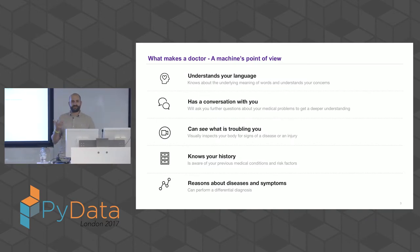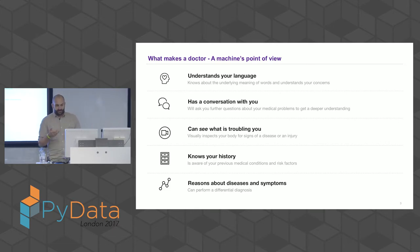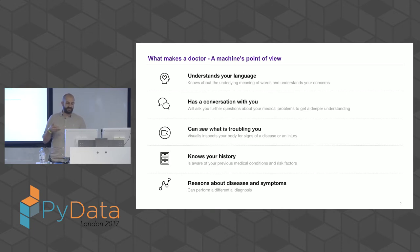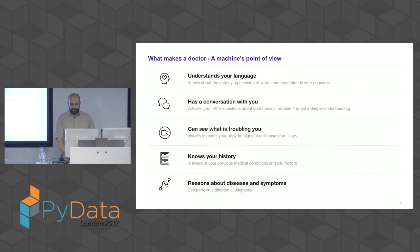If you want to automate primary care it makes sense to look at what a doctor actually does. We have a skewed perception of that because a lot of the things a doctor does are actually very simple for us. From a machine's point of view, very simple skills like understanding what you say, having a conversation with you, and visually inspecting what's wrong with you are nearly harder than the ones we normally associate with a doctor — which is knowing your history, having medical prior knowledge, and reasoning about diseases and symptoms. We put a lot of emphasis on the development of diagnostic systems at Babylon.